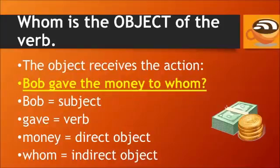The word whom functions as the object of the verb. The object receives the action or is acted upon. For example: Bob gave the money to whom. Bob is the subject — Bob performed the action of giving. Gave is the verb. Money is the direct object, and whom is the indirect object, the recipient of the action.